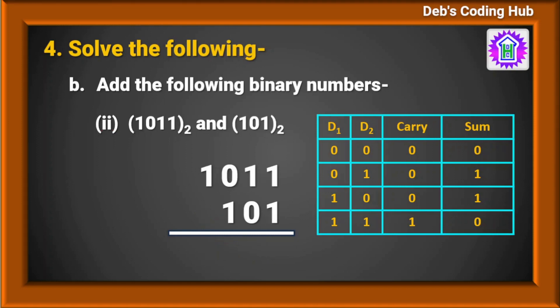Next question: add 1011 and 101. Starting from the right: 1 plus 1 is 10, so 0 is the sum and carry is 1. Again 1 plus 1 is 10, so 0 is sum and 1 is carry. Then 1 plus 1 is 10 again.